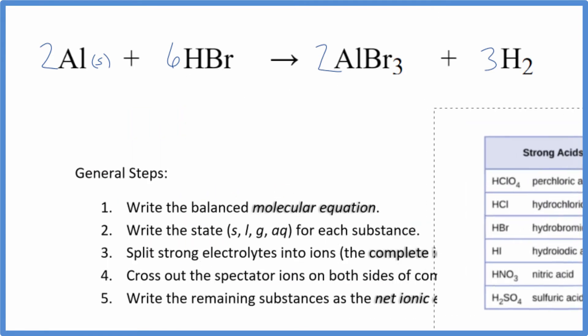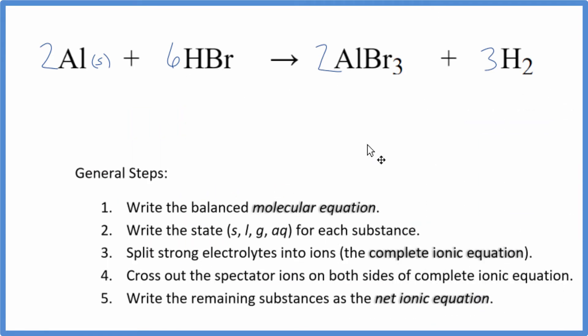So we know that it's a strong acid. What that means is it's going to dissociate into its ions, so we're going to put a little aq—that's going to be aqueous. Bromides are very soluble (aq). Hydrogen, that's a gas.